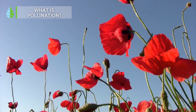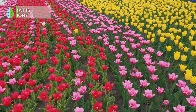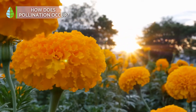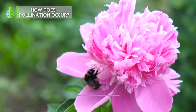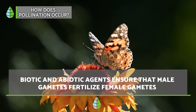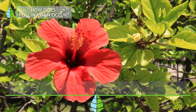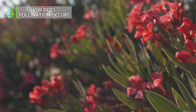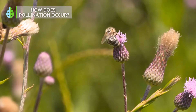Therefore, we can say that it is the first step to achieve the survival and evolution of the plant species. How does pollination occur? Natural pollination is done by transporting pollen through biotic and abiotic agents, which guarantee that the male gametes found in the stamens of the flowers are deposited in the pistil of the flowers, thus fertilizing the female gametes.